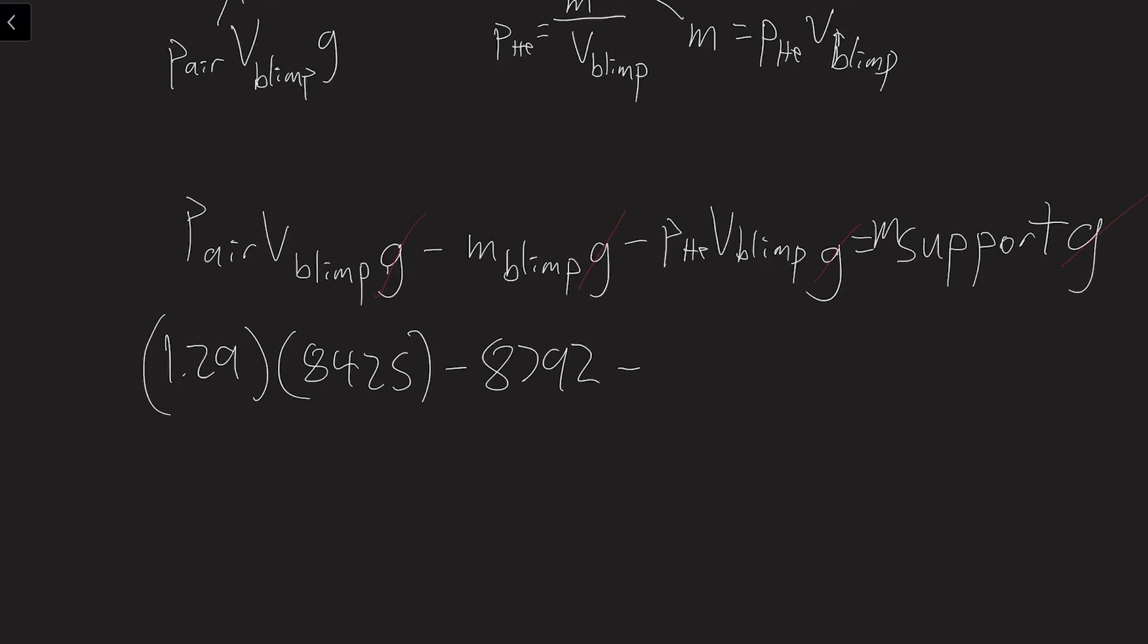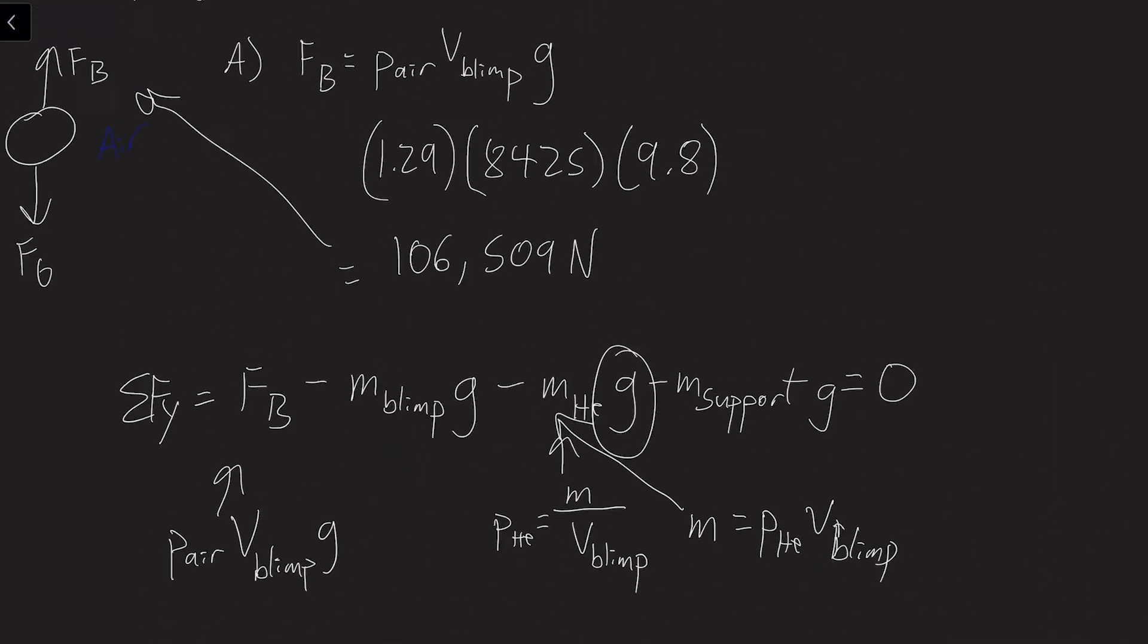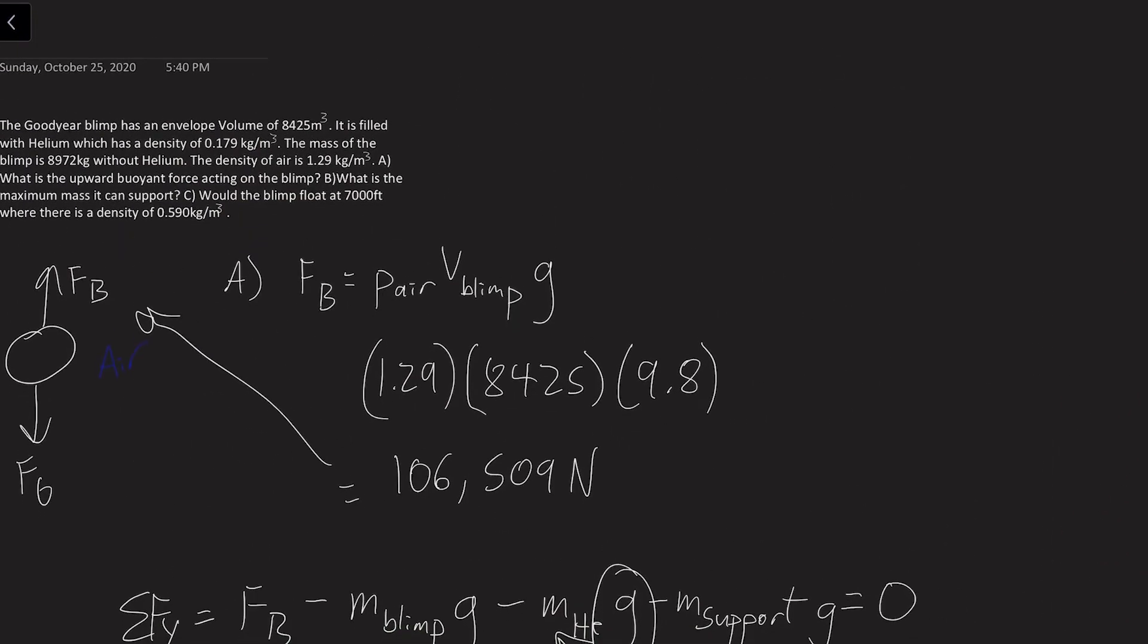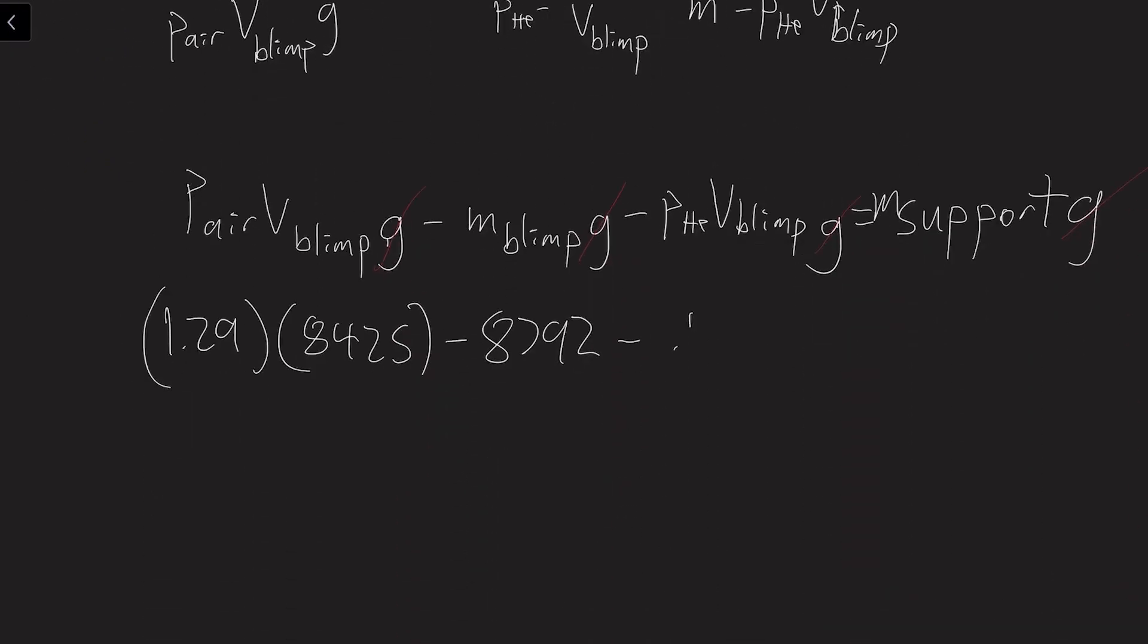And then we have to subtract the density of helium, which is in the problem 0.179 kilogram per cubic meter, then times the volume of the blimp, which is 8,425. That will give you the mass it can support, the maximum mass it can support. So the maximum mass it can support is 388.2 kilograms.